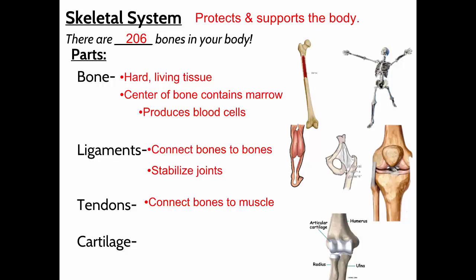A ligament connects, for example, the femur to the fibula. Tendons are what pull on the bones to actually move them — muscle pulls on the tendon, tendon pulls on the bone. The third type of connective tissue is cartilage, found at the ends of bones and in other places. Cartilage covers the outside of bones, cushions them, and helps them slide easily over each other when the joints move.